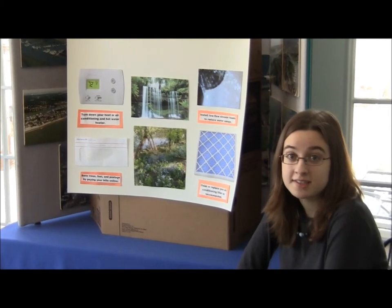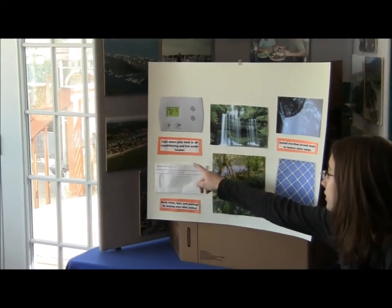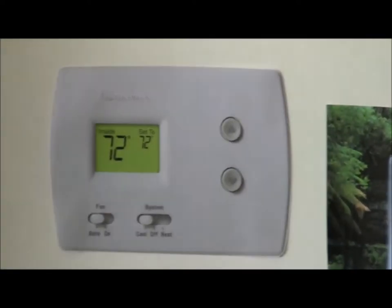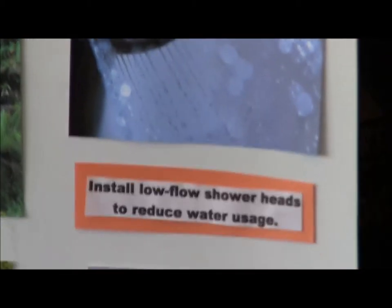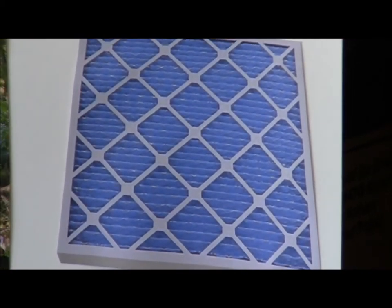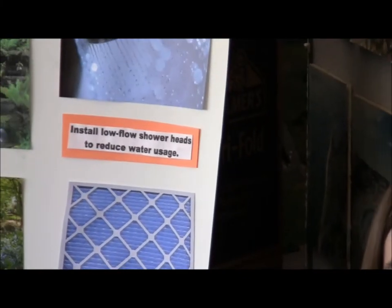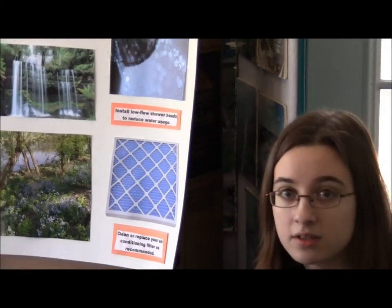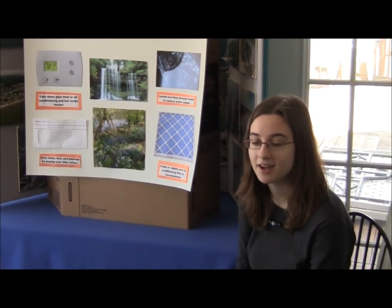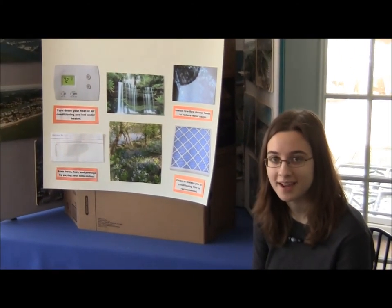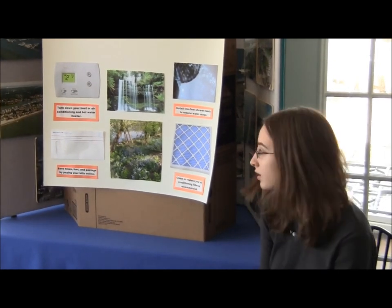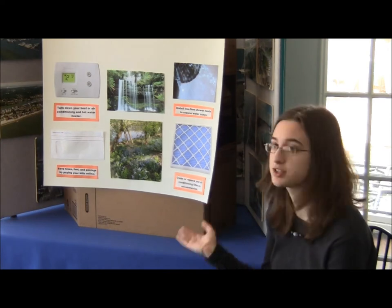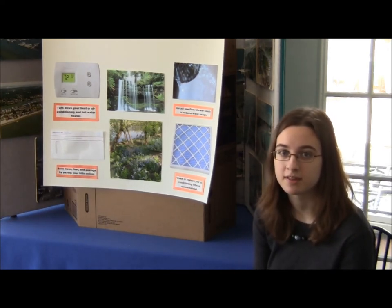A few ways to stay sustainable at home: turn down your heat or air conditioning and hot water heating; save trees, fuel, and postage by paying your bills online; install low-flow shower heads to reduce water usage; and clean or replace your air conditioning filter as recommended. It's important to do these things because power plants send off nitrogen, carbon dioxide, and phosphorus into the air, which then goes into the bay — the less electricity you use, the fewer chemicals go into the bay.